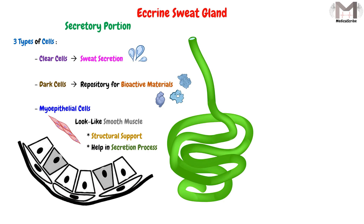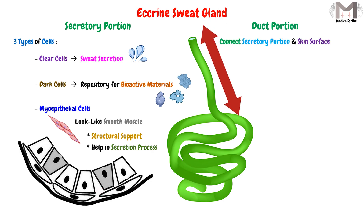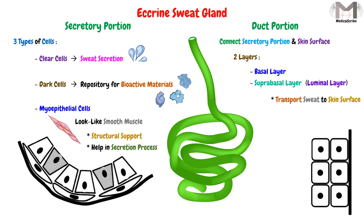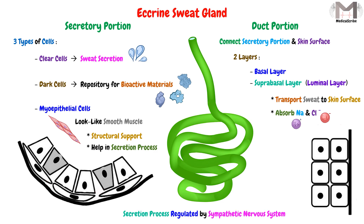The duct portion connects the secretory portion to the skin surface. This duct is also composed of two layers: the basal layer and the suprabasal (or luminal) layer. The main function of this duct is to transport the sweat to the skin surface from the secretory portion. It has also been found that the duct absorbs the sodium and chloride that exist in the sweat. The secretion process is regulated by the sympathetic nervous system.